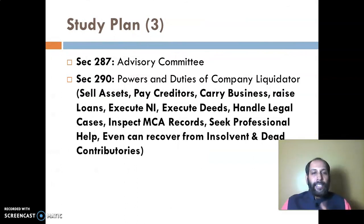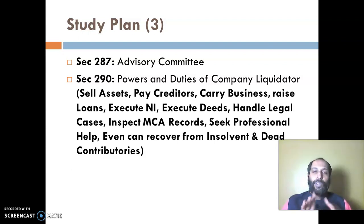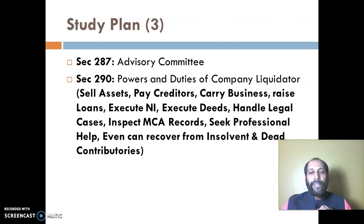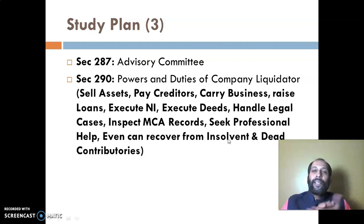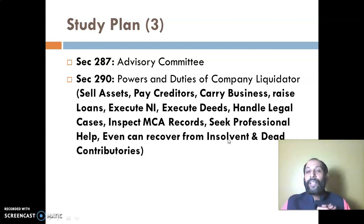Study Plan 3: Section 287 is about the advisory committee - read through it. Section 290 is a very important section for exam purposes, dealing with the powers and duties of company liquidator. One question may be asked in the exam from this area. The powers of the company liquidator include: selling assets of the company, paying creditors, carrying on the business for the purpose of winding up, raising loans, executing negotiable instruments, executing deeds on behalf of the company, handling legal cases, inspecting MCA records, seeking professional help from receivers, company secretaries, legal advisors, surveyors and loss assessors, and recovering from contributories through their legal representatives.